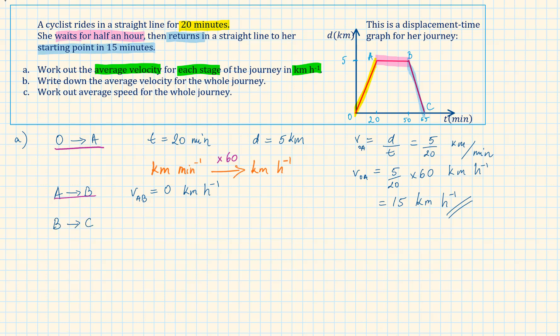And finally, the stage of the cyclist journey from B to C is the return journey. From 15 minutes to 65 minutes, we have 15 minutes. And from a displacement of 5 to 0, we have minus 5. It's very important to include the minus because we are talking about displacement. Velocity and displacement are vector quantities, hence the direction matters.